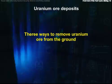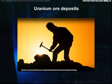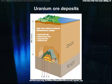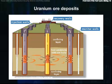Uranium ore is removed from the ground in one of three ways, depending on the location of the deposit. Uranium deposits close to the surface can be recovered using the open-pit mining method, and underground mining methods are used for deep deposits. Sometimes the ore may be extracted by in-situ recovery, a process that dissolves the uranium while still underground and then pumps the uranium solution to the surface.